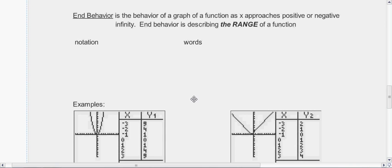The end behavior is describing what's happening to the height of that graph. So it's describing the range of the function, or you could think about this as the height of the graph of the function.